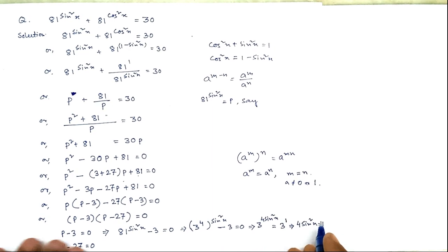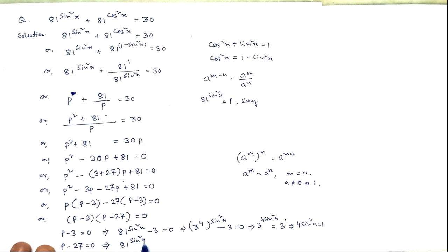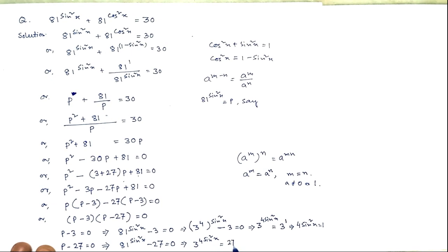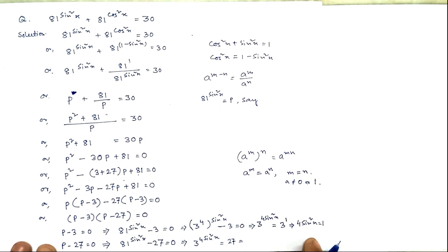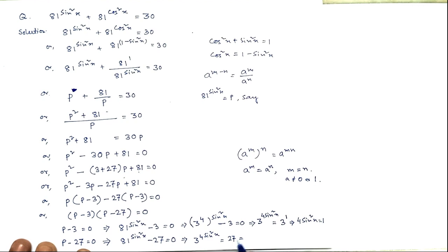Case 2: p minus 27 equals 0. Then 81 to the power sin²x equals 27, which gives 3 to the power (4 sin²x) equals 27. Writing 27 as 3 cubed, we get 4 sin²x equals 3.